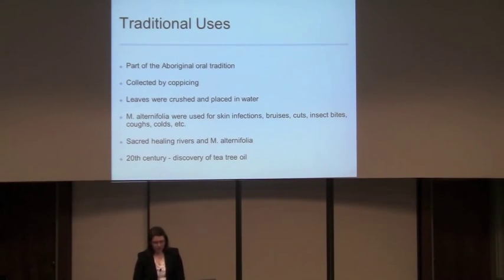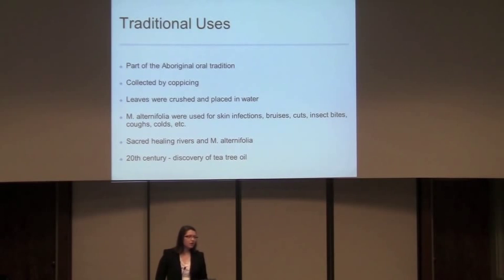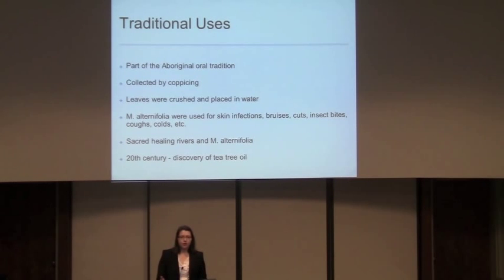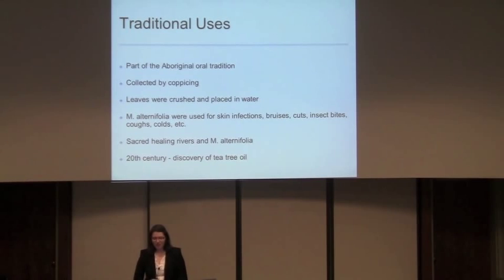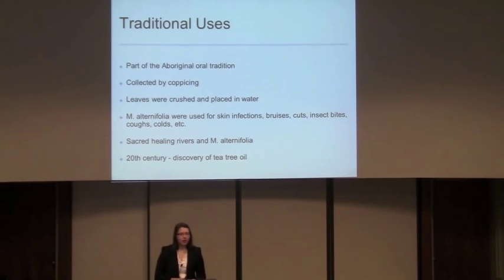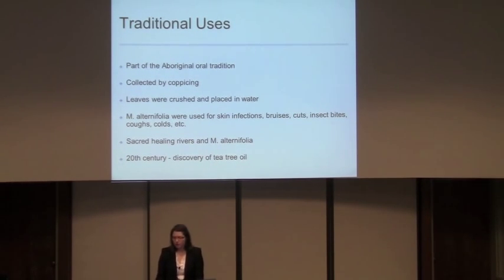Tea tree oil was part of the aboriginal oral tradition, so there are no books documenting it until about the 20th century. They collected it by coppicing, which is where you cut the tree down to the stump and then allow it to grow back — so it's eco-friendly and reusable. The leaves were crushed and either placed directly on wounds to help heal them, or put in water for a simple infusion.